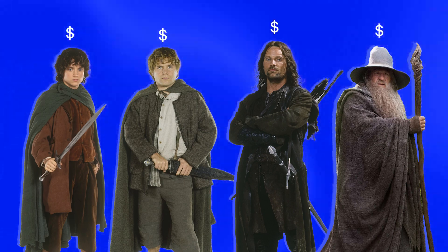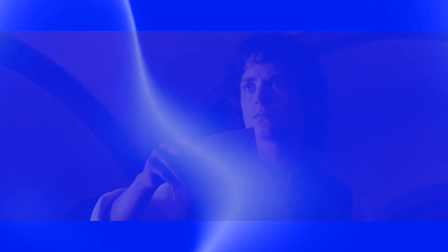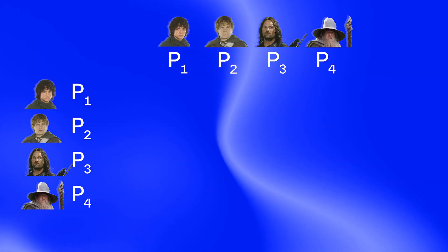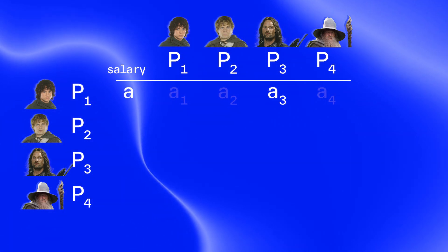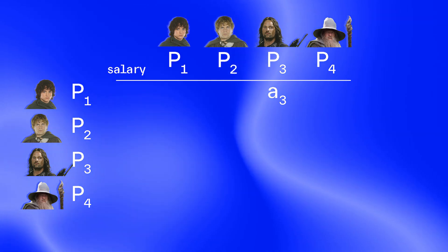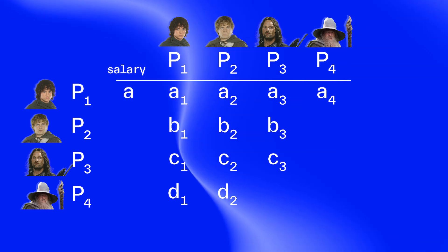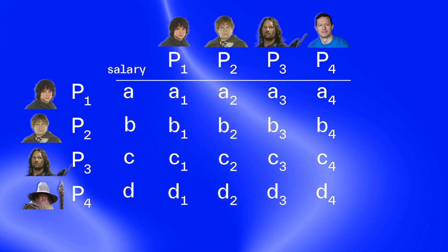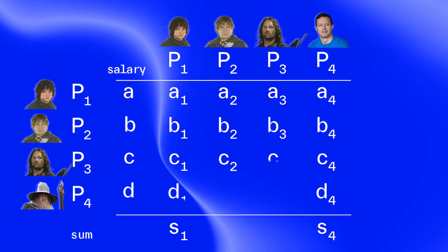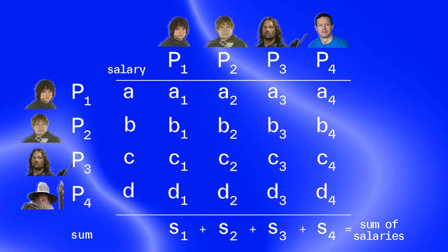For some reason they have a salary and they want to compute the average of that salary, but that's sensitive information. So they use the blind computer to do that. You put them as rows and columns in a matrix, and each one finds four numbers that add up to their salary. If I give you one of those numbers it doesn't reveal anything about the salary. So I give my first number to the first person, second to the second, third to the third, and keep the fourth for myself. Each person does the same. Then all I have to do is sum up my column, everyone does the same, we exchange those numbers and add them up — and that equals the sum of all the salaries, which we divide by four to get the average.